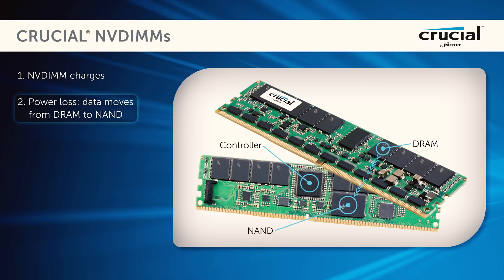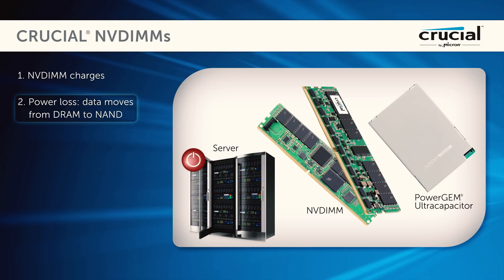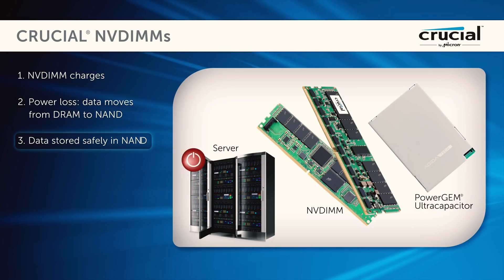The controller then manages the transfer of data from the DRAM to the on-module NAND. This is known as the backup operation, which usually takes between 60 and 90 seconds depending on the amount of data it must back up. Once the backup operation finishes, the NVDIMM enters a zero power state.